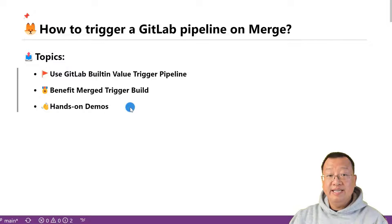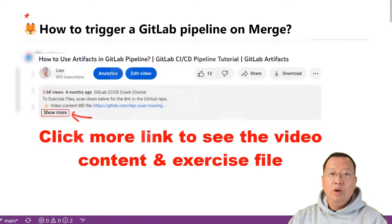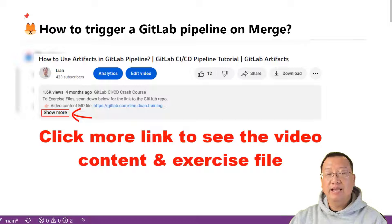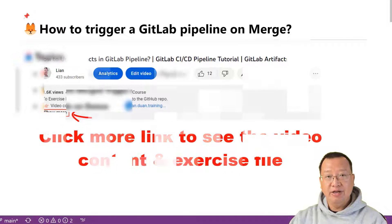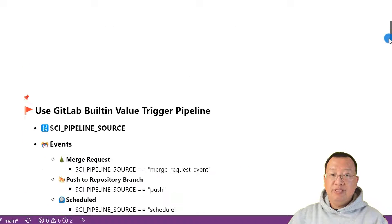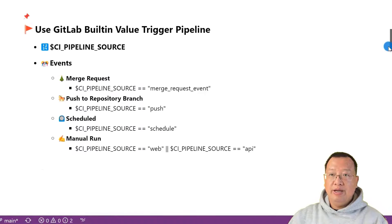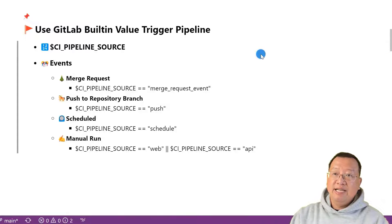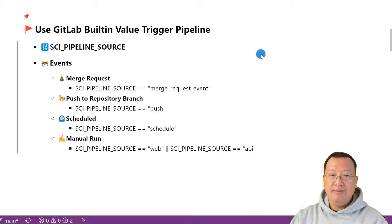I'll walk you through the steps using CI_PIPELINE_SOURCE in job rules and workflow rules, so you can see exactly how all this works in action. Video-related markdown and pipeline files are in my GitLab page — the links are below. Now let's start with the first topic: use GitLab built-in variable to trigger a pipeline.